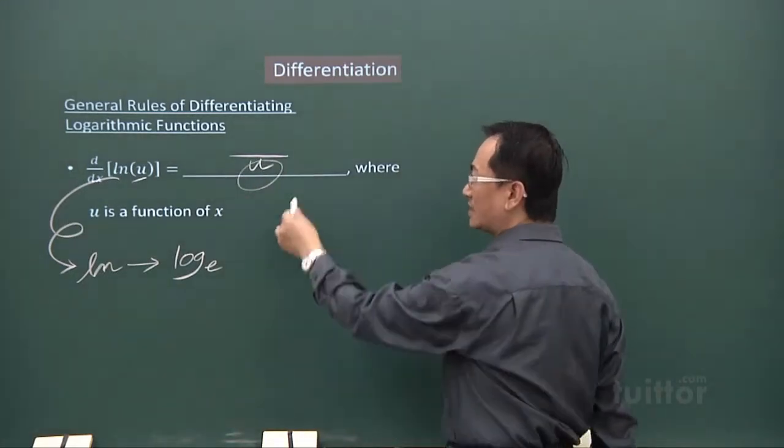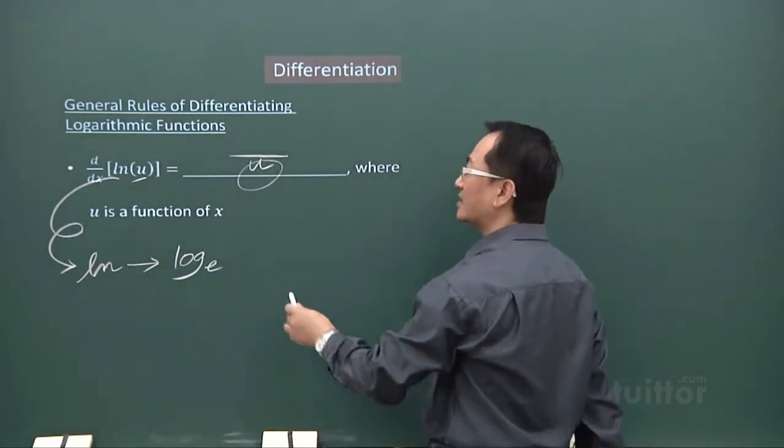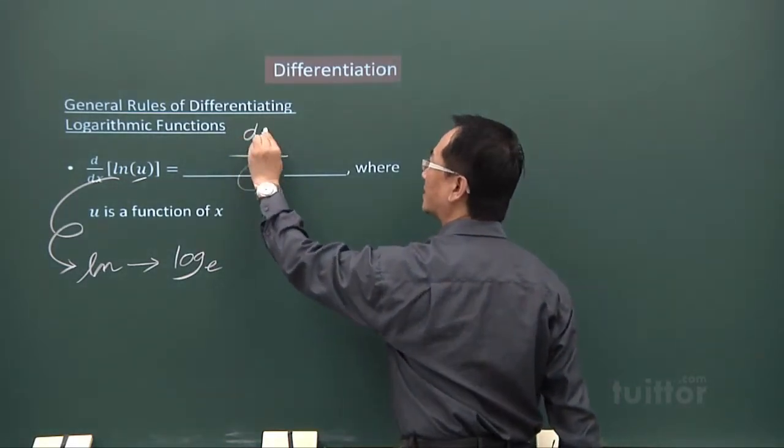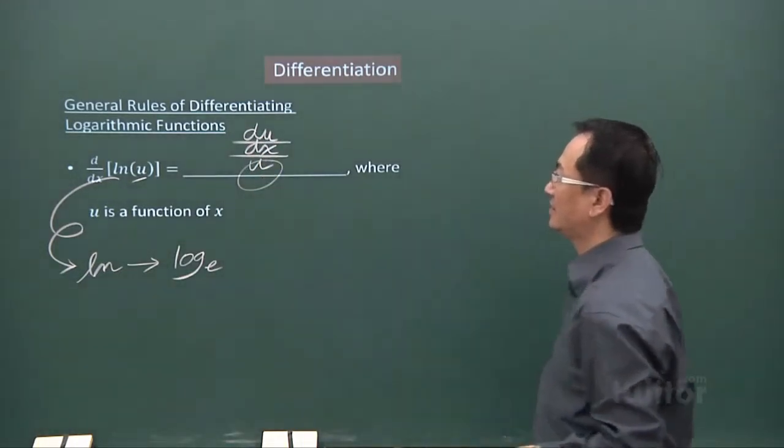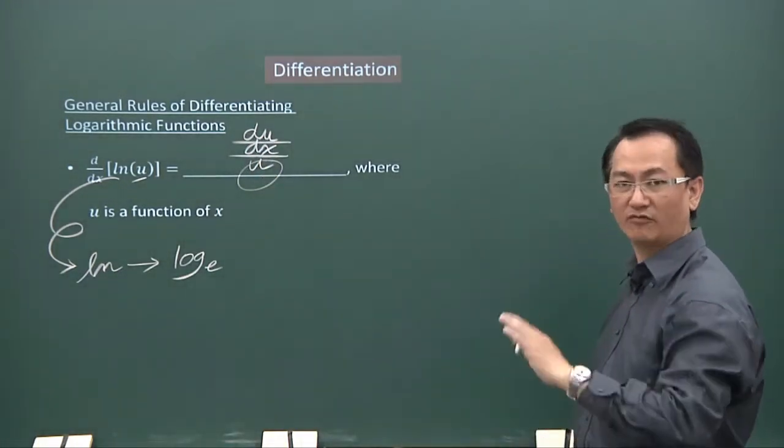Since u is a function of x, you differentiate u, it will appear as du over dx. So that will be the form you're looking at.